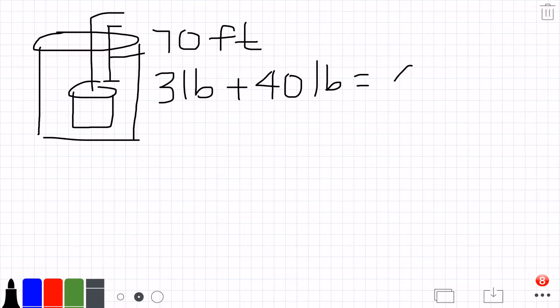This gives it a total of 43 pounds. It's being pulled up at a constant velocity of two feet per second, and it is losing water out of a hole in the bucket at negative 0.2 pounds per second. It's negative because the water is decreasing.